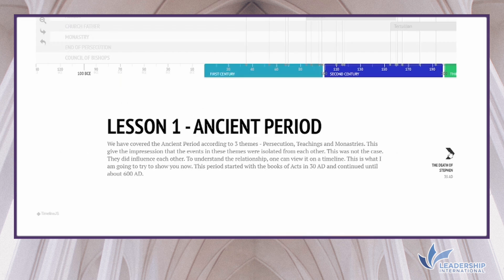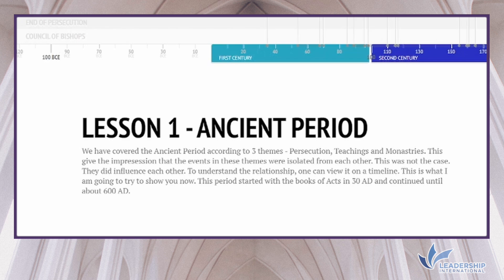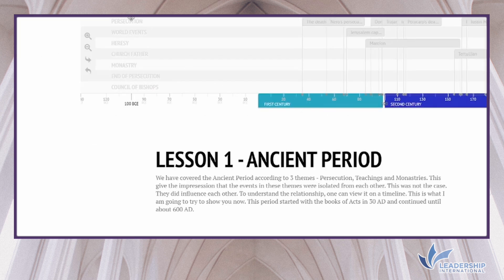We covered the ancient period according to three themes: persecution, teachings, and monasteries. This can give the impression that the events in these themes were isolated from each other, but that was not the case — they did influence each other. To understand the relationship one can view it on a timeline. The period started with the book of Acts in 30 AD and continued until about 600 AD, spanning the 1st through the 7th century. The timeline is divided into persecution, world events, heresies, church fathers, monasteries, end of persecution, and councils of bishops.